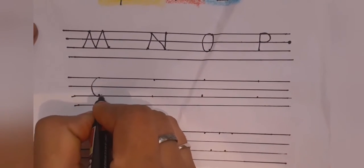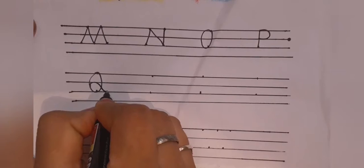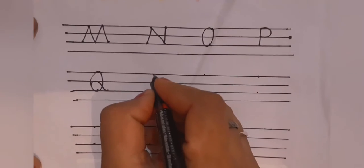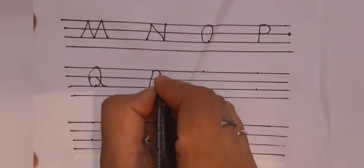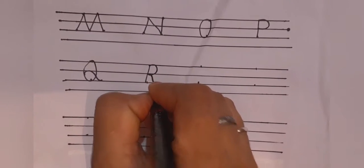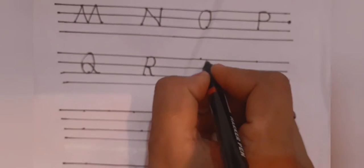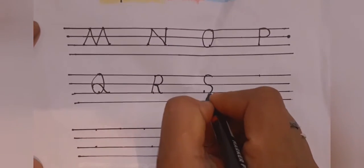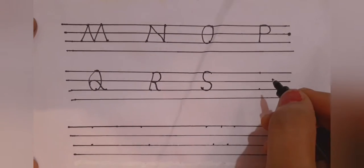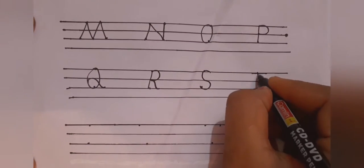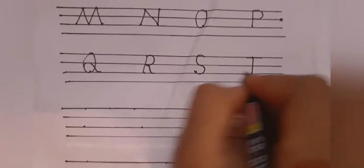Q for queen. R for rose. S for shape. T for tiger.